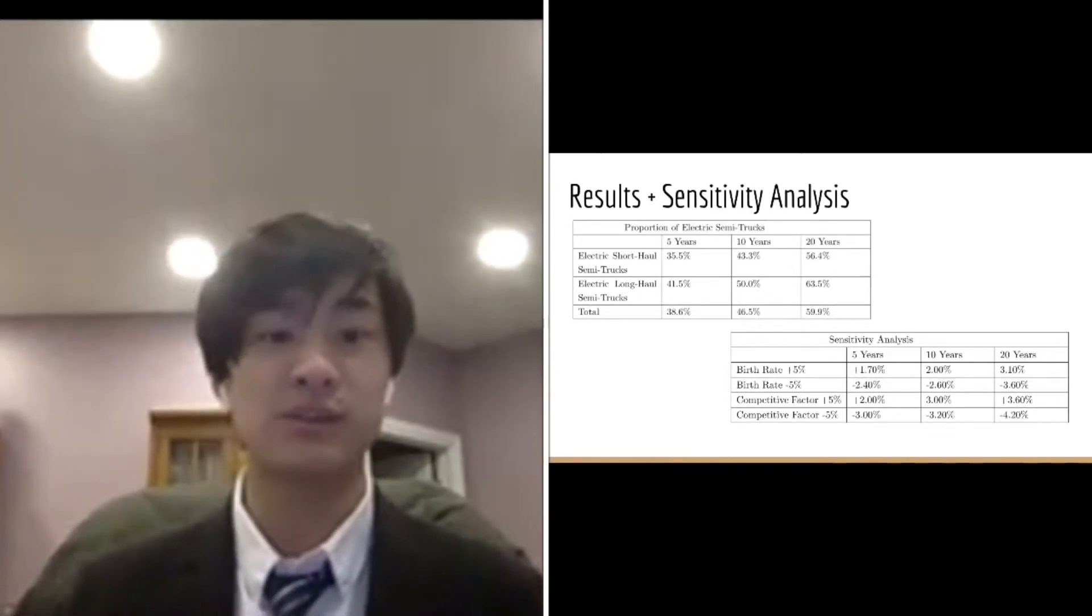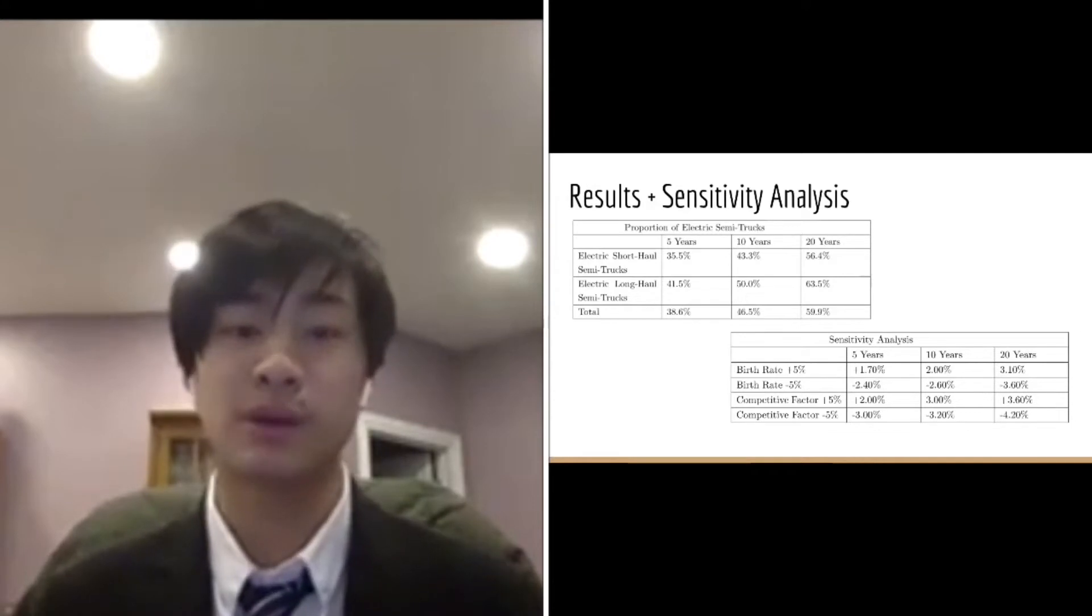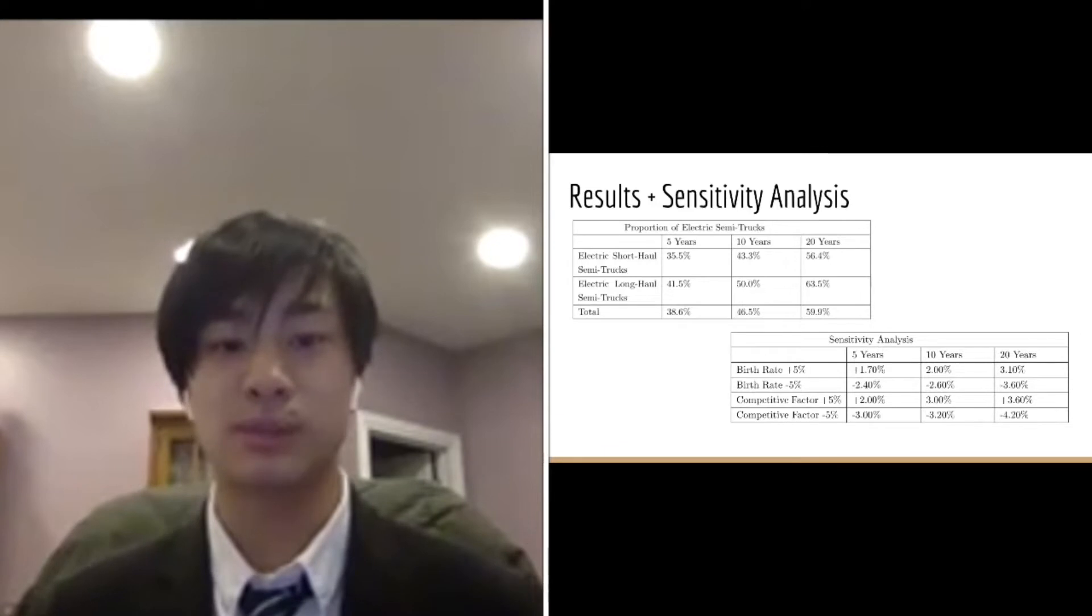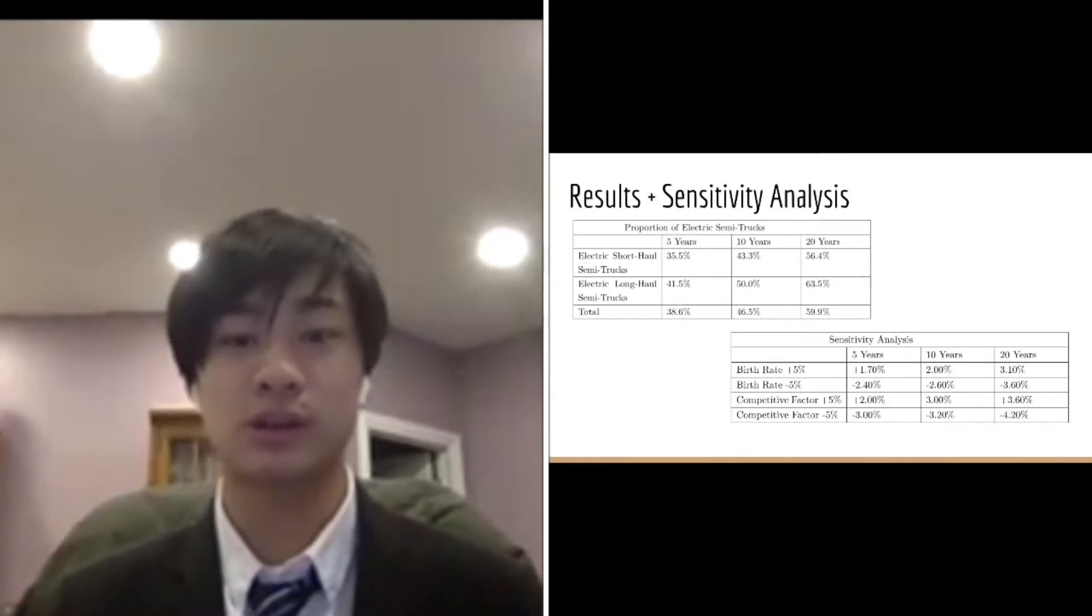As part of our sensitivity analysis, we decided to independently alter the competitive factor and birth rate of the semi-trucks to see if the changes in our results matched with our expectations. For example, a 5% increase in the birth rate of semi-trucks corresponded to a 3.1% increase in the electric semi-trucks 20 years in the future. This matches with our expectation that the proportion of electric semis would increase with increasing birth rate, but also doesn't mark such a significant change that we would have to question the robustness of our model. The rest of the results of our sensitivity analysis can be found in the table.